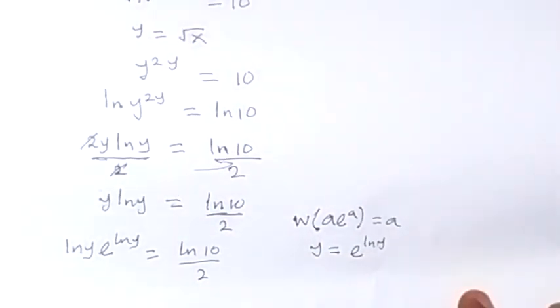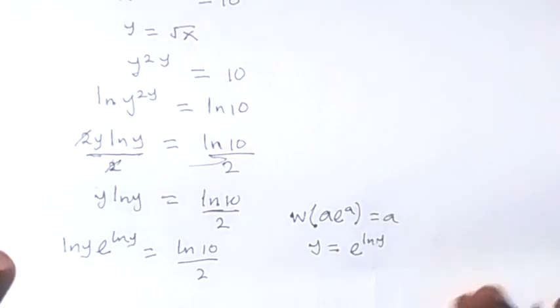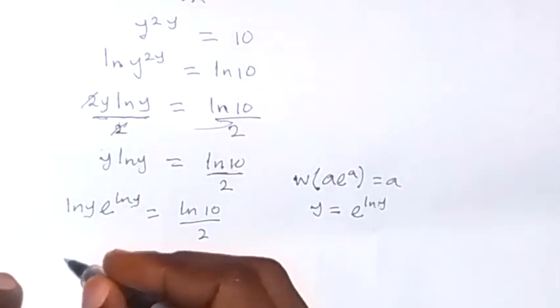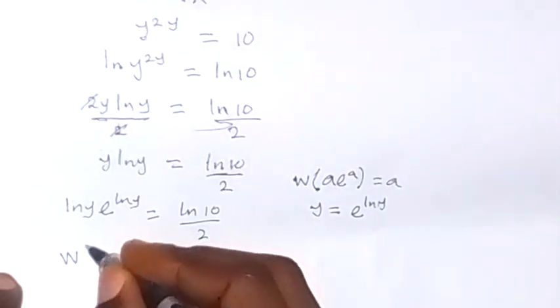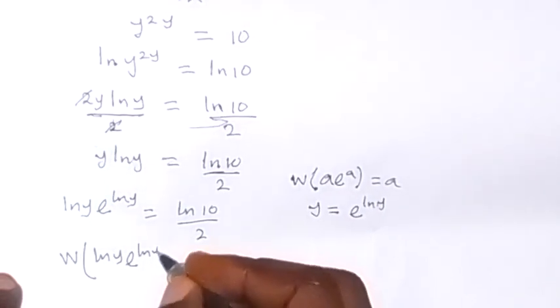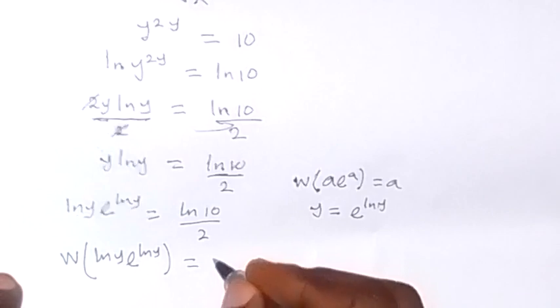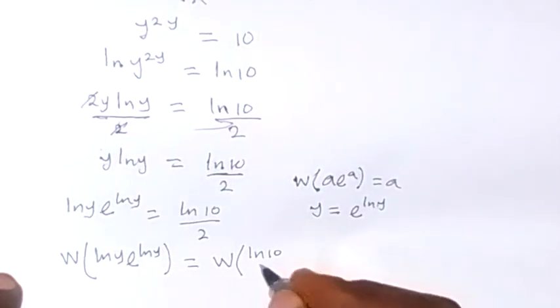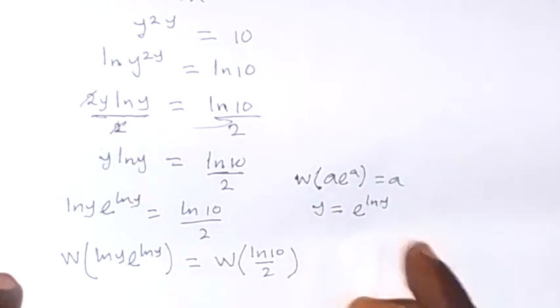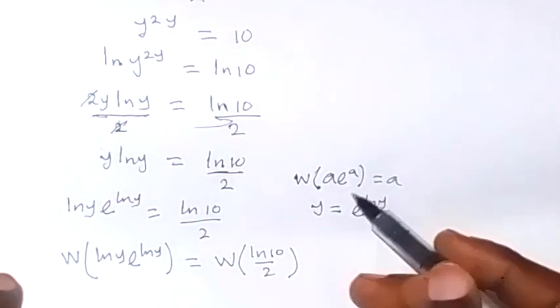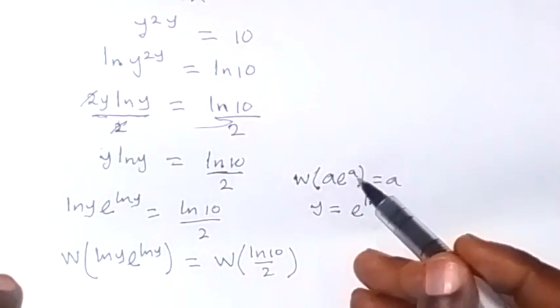Then when we apply the W function, then this one will be W of ln y exponent ln y equals to W function of ln 10 over 2.